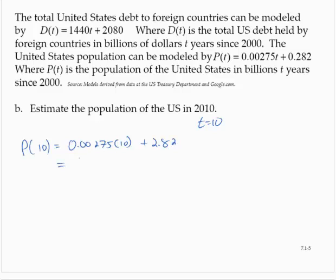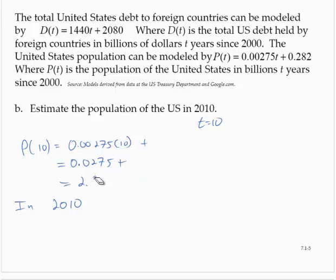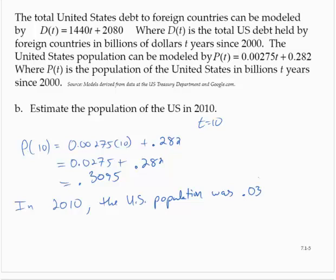Multiplying by 10, we move the decimal to the right, so we have 0.0275 plus 2.82, which equals 2.8475. In 2010, the US population was 0.3095 billion.